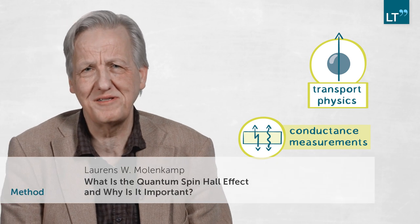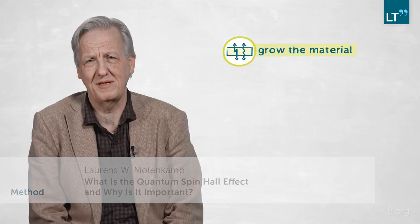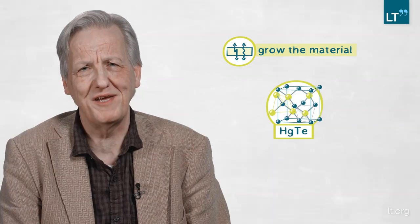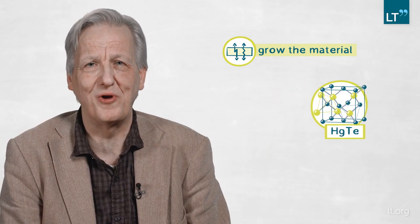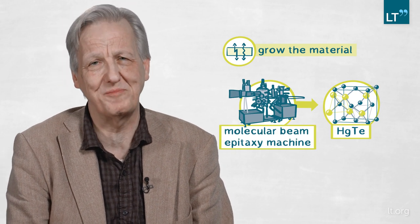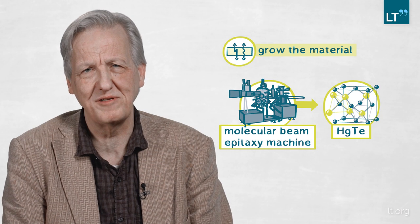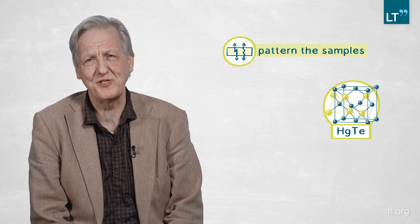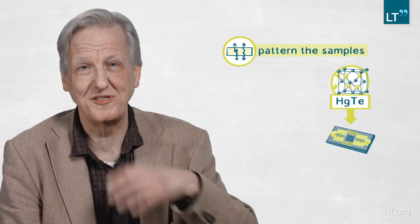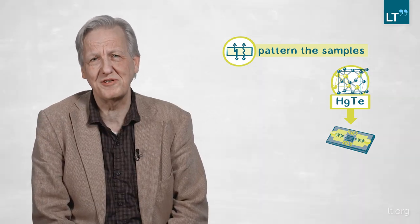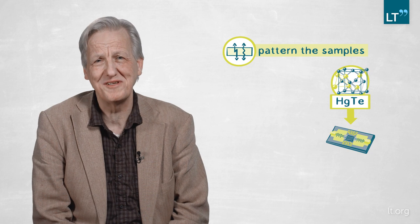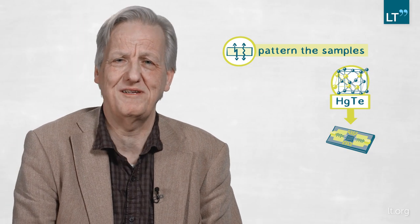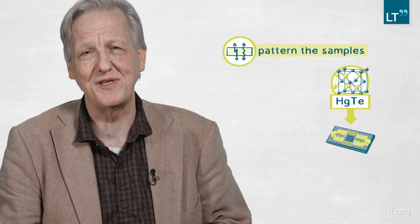The method that we use is transport physics — we measure the conductance of electronic devices. This starts with the growth of the material; our materials are pretty special semiconductors. We have to grow them layer by layer in something we call a molecular beam epitaxy machine, which is ultra-high-vacuum technology — very extensive growth technology. Then we have to pattern these samples into very small structures, just like the transistors in the chips in your cell phone, to do what we call transport experiments to see the effects we want to see, because they occur at very small distances.